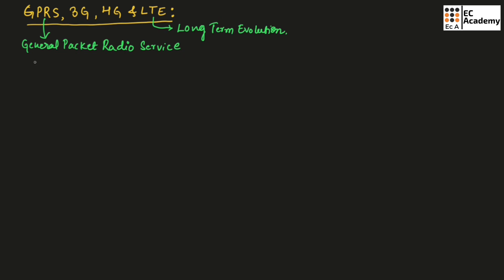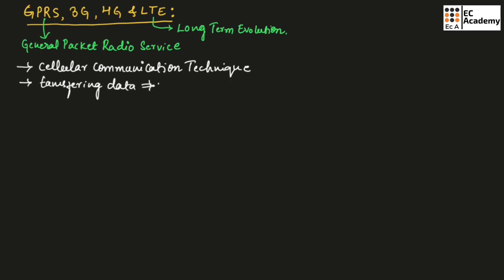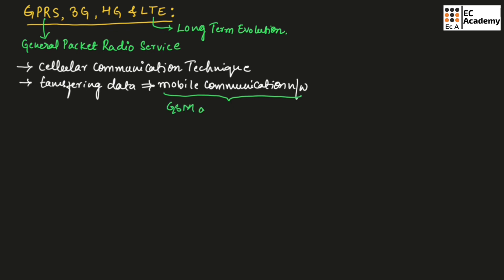GPRS, 3G, 4G and LTE are cellular communication techniques for transferring data over a mobile communication network. The mobile communication network can be GSM or CDMA.